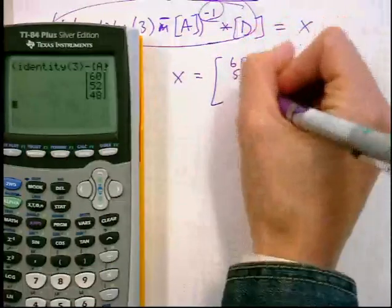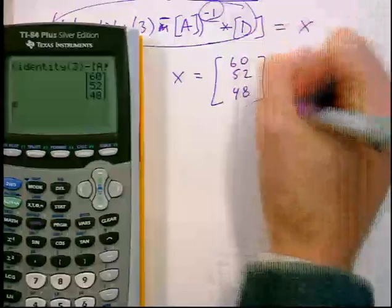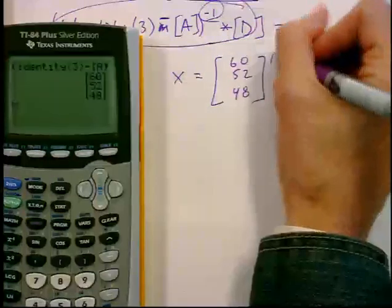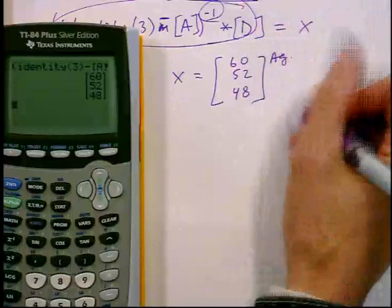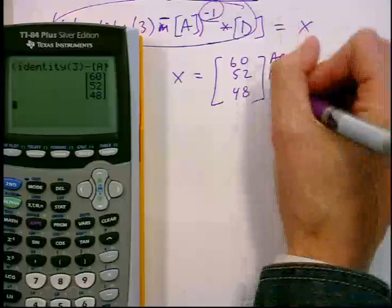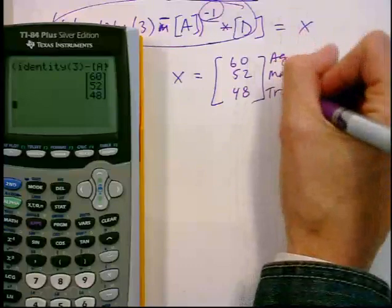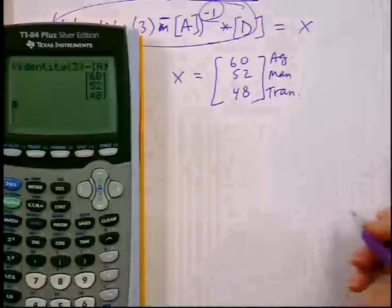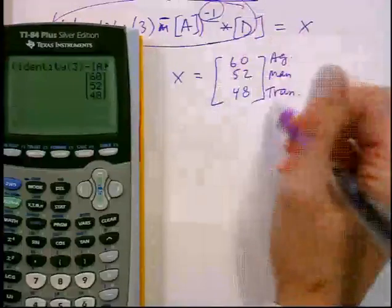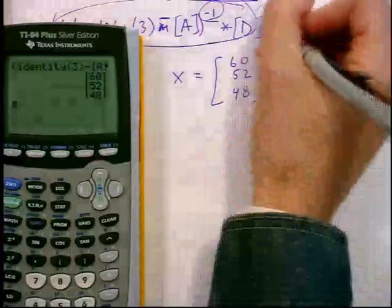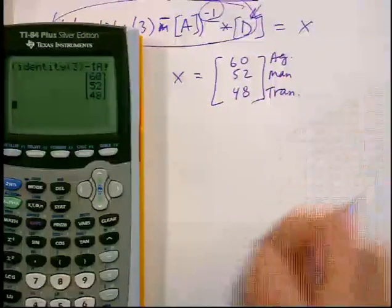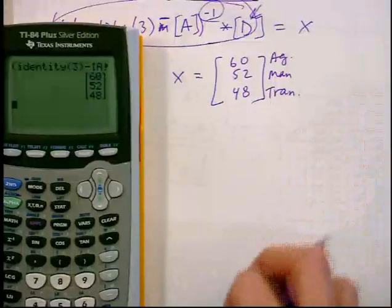The result is 60, 52, 48 — so 60 units of agriculture, 52 units of manufacturing, and 48 units of transportation. This gives enough to meet the demand and also handle the quantities used up during production.